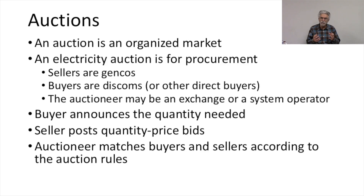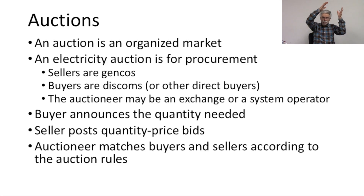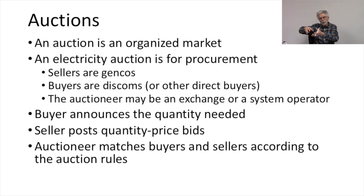In my case in the US, the auctioneer is the system operator for my region. The buyer announces the quantity of electricity needed, and sellers post quantity-price bids for electricity, and then the auctioneer matches buyers and sellers according to auction rules. Generally, that means sorting the power bids from low to high, and then accepting the low bids up to the point where we have the power we need.